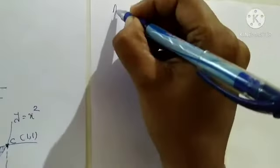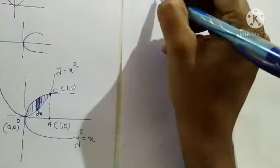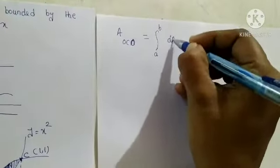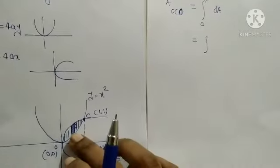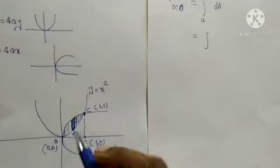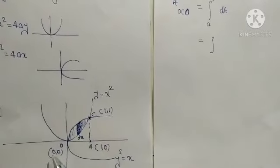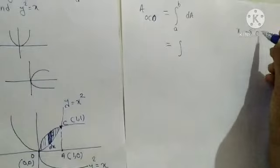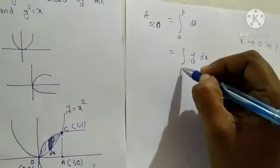I am going to use this vertical strip. The area of region OCA equals integral from A to B of dA, which is integral 0 to 1 of y dx. If we take this vertical strip, the limit depends only on the x-axis. The x-axis changes from 0 to 1, and dA is y dx. So we get our limit as 0 to 1 and dA is y dx.